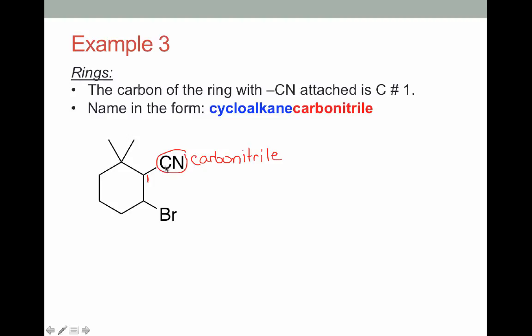So what we're going to do is make this ring carbon that contains the nitrile carbon 1. So now the carbon of the nitrile is no longer getting a number. And then we number around our ring to give the lowest substituent numbering. So since there's two groups on this carbon versus one, it's best to make this carbon 2 and number around the ring counterclockwise. From here, we'll alphabetize and number our substituents. So bromo versus methyl, B comes first alphabetically. So let's do 6-bromo. We have 2,2-dimethyl.